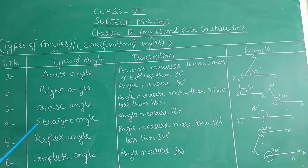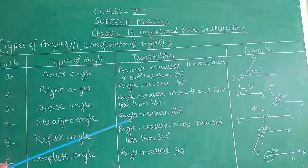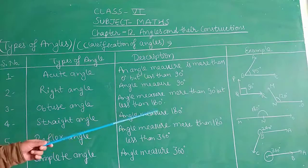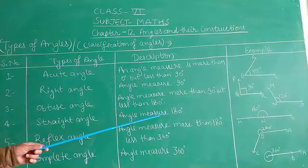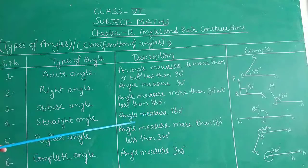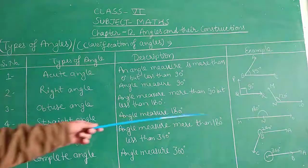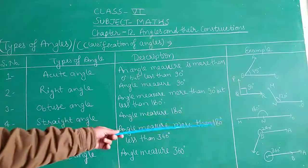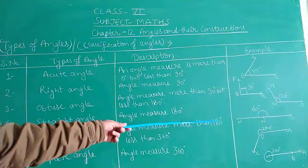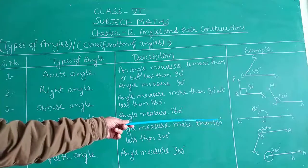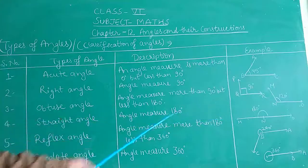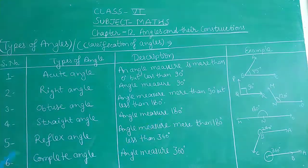The fourth type is straight angle. The angle measuring exactly 180 degrees is called a straight angle. As given in the figure, angle MON is a straight angle.